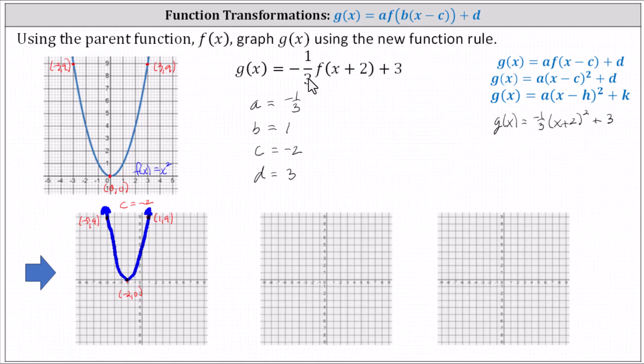This affects the y value, which means you now take the y values and multiply by negative one-third. Starting with the vertex, zero times negative one-third is still zero. The vertex is still negative two comma zero. For the point negative five comma nine, nine times negative one-third is negative three, giving us the ordered pair negative five comma negative three.